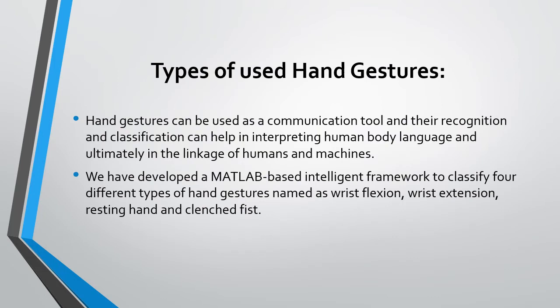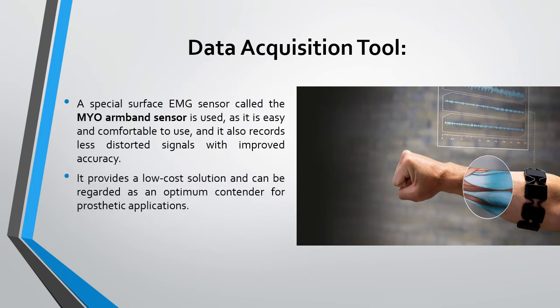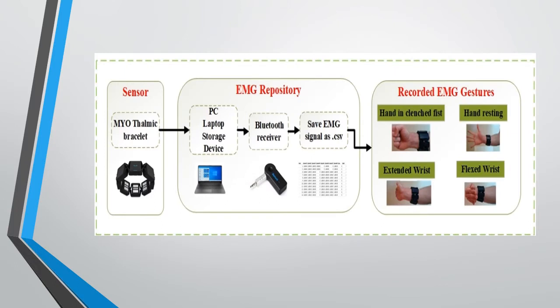Types of used hand gestures: In our study, the cubic support vector machine classifier is trained on four different EMG based hand gestures — when the hand is at rest, in a clenched fist, and when the wrist is flexed or extended. The first step for designing our system was to acquire some raw data. We have taken an open access dataset of EMG signals regarding different hand gestures. This data is recorded by a special surface EMG sensor called the myo-armband sensor, which is easy and comfortable to use and records less distorted signals with improved accuracy. The EMG signal is acquired using a myo-armband bracelet connected to a PC using a Bluetooth module, working on four major classes: hand at rest, hand clenched in a fist, wrist extension, and wrist flexion.